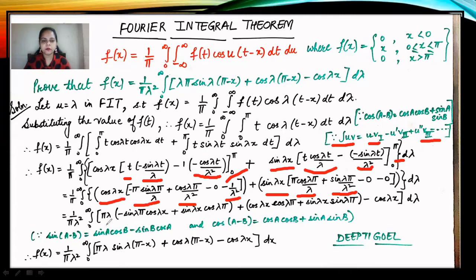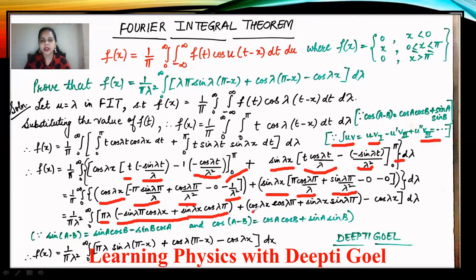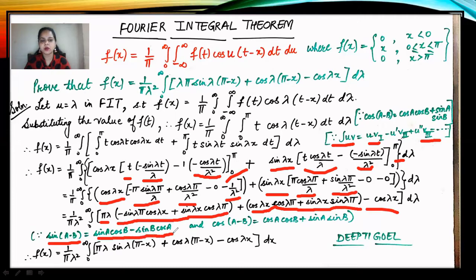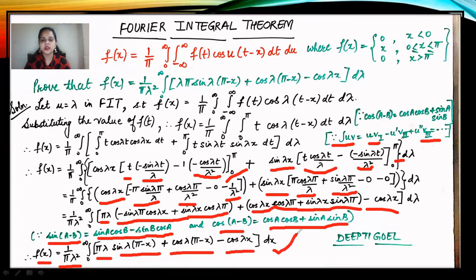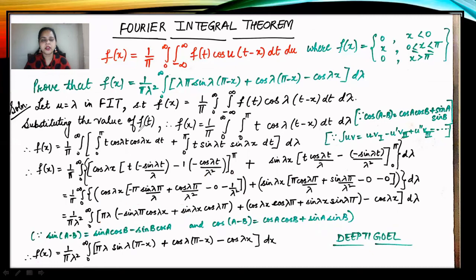Collecting the 1/λ coefficient terms gives: −sin(λπ)cos(λx) + sin(λx)cos(λπ), and the 1/λ² terms give: cos(λx)cos(λπ) + sin(λx)sin(λπ) − cos(λx). Applying sin(a−b) = sin a cos b − cos a sin b to the first bracket and cos(a−b) = cos a cos b + sin a sin b to the second, we obtain f(x) = (1/π) ∫₀^∞ (1/λ²)[λπ sin(λ(π−x)) + cos(λ(π−x)) − cos(λx)] dλ, which is the desired result.